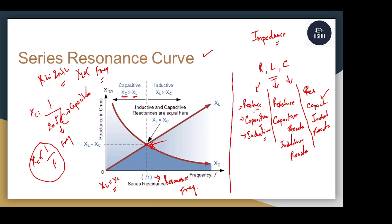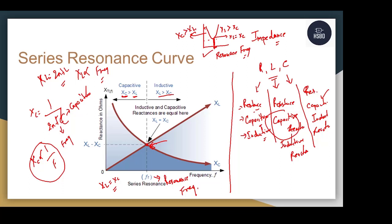After the resonance frequency, the capacitor itself shows a very high inductive reactance. So after the series resonance frequency, the capacitor starts acting as an inductor. The inductive properties keep on increasing. As you can see, XL is greater than XC, and when XL is greater than XC the graph goes up. The knee frequency is known as the resonance frequency. At resonance frequency XL equals XC, and before this point XC is greater than XL. This is the basic principle behind the series resonance curve.